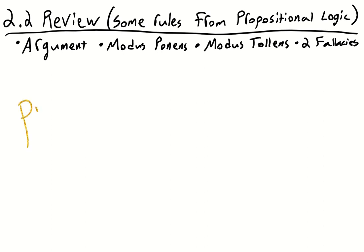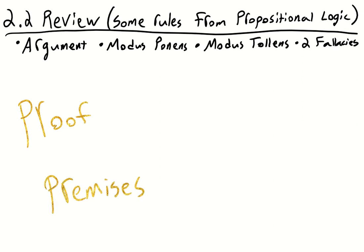Remember that a proof always begins with some premises, and these premises are simply given sentences, which in mathematical logic can either be atomic or molecular. They declare something to be the case — they are truth-functional. These sentences can also be called propositions. A proof starts with given propositions that are simply taken for granted.